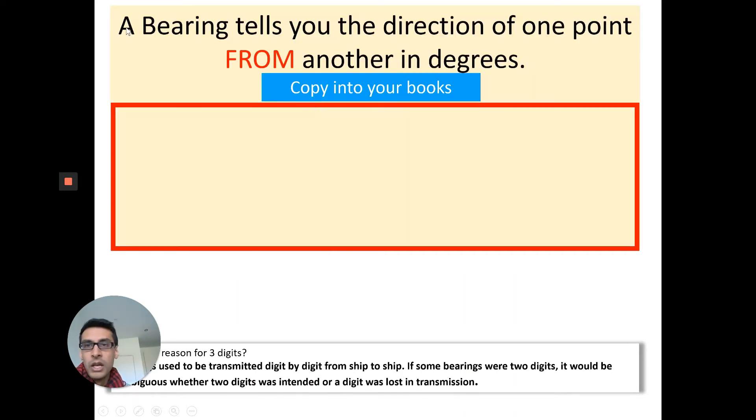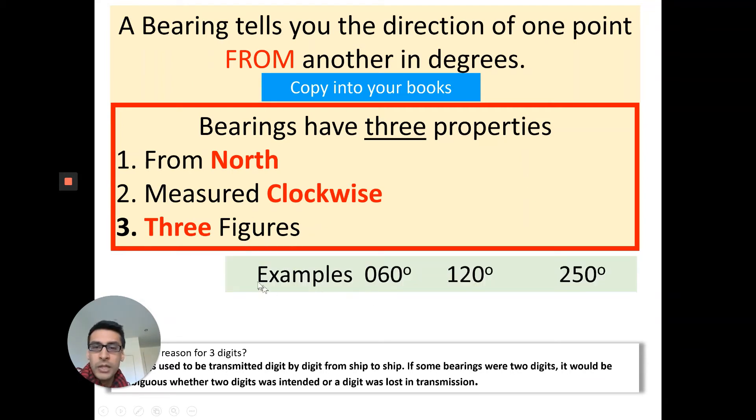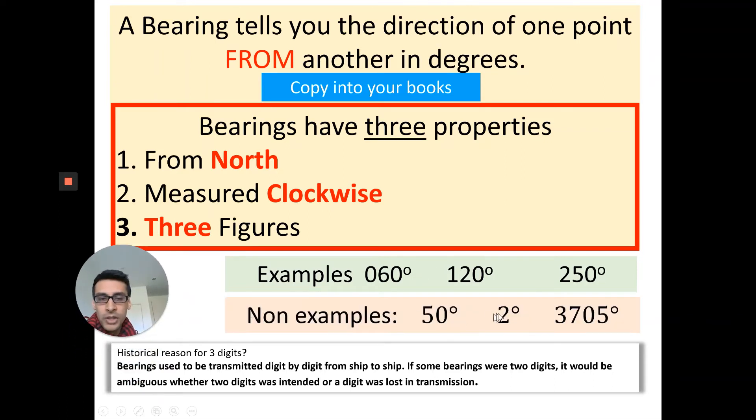This is what you need to copy into your books: A bearing tells you the direction of one point from another in degrees. They have three properties. First, they're measured from north. Second, they're measured clockwise. And third, they have three figures. Some examples of bearings are 060 degrees, 120 degrees, or 250 degrees. Some non-examples are 50 degrees, 2 degrees, or 3705 degrees.